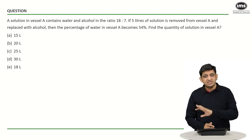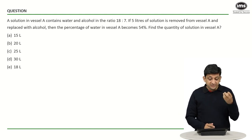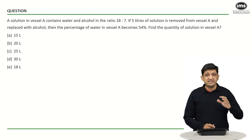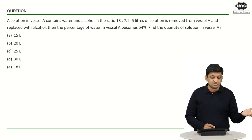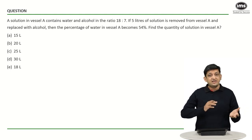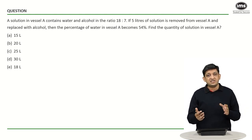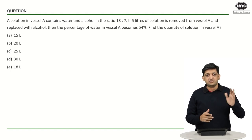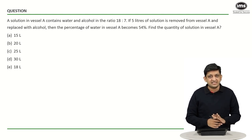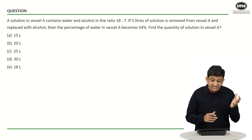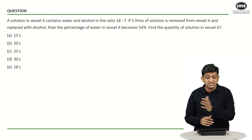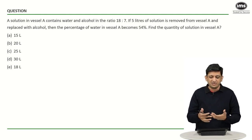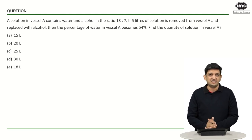5 liters is removed. If 25x basically contains 18x of water, then 5 liters will contain what amount of water? You figure out that it is going to be 3.6 liters. Then you remove 3.6 liters of water, replace it with alcohol, and you can do it in that manner. But it is going to be a slightly difficult way of solving this.